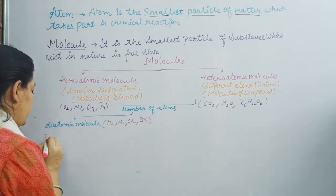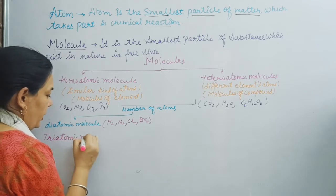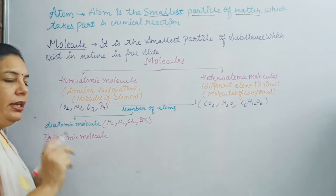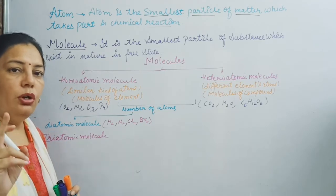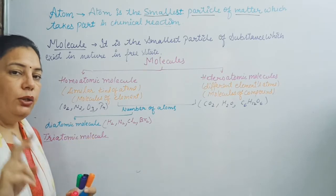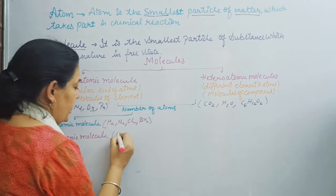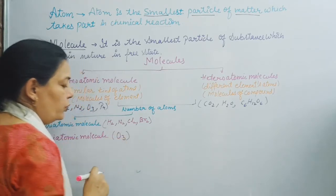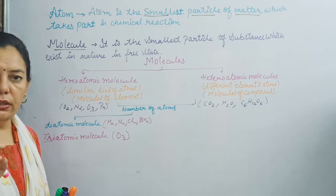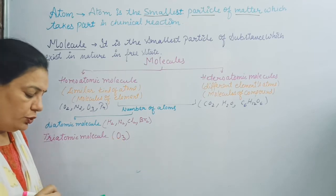The second category is a triatomic molecule. It contains three atoms, but all three atoms are of the same element. The example is O3 — ozone gas. It is made up of three atoms of oxygen. One molecule of ozone contains three oxygen atoms.